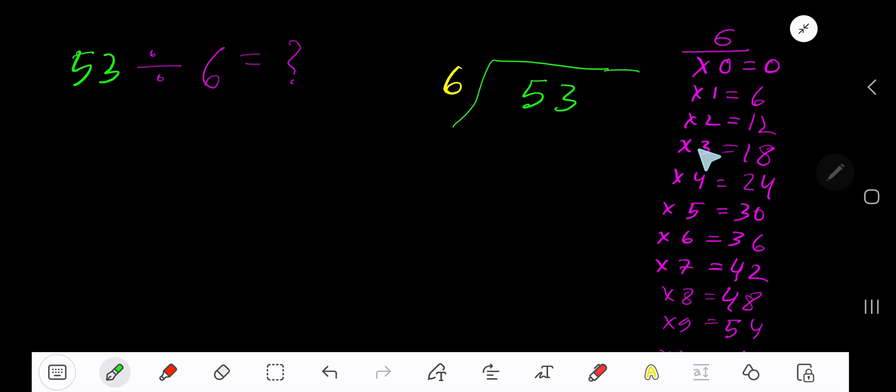6 times 0 is 0. 6 times 1 is 6. 6 times 2 is 12. 6 times 3 is 18. To find out the multiplication table of 6, just add 6 to the previous step. 0 plus 6 is 6. 6 plus 6 is 12 plus 6 is 18.